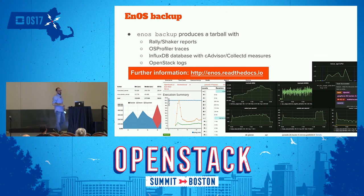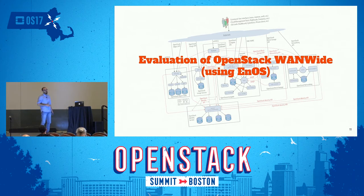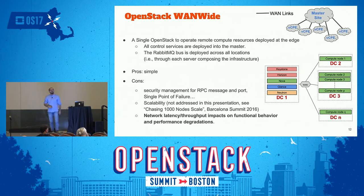Thanks for this overview of ENOS. As mentioned, everything is online — you can go test it and give remarks and feedback. The purpose of this talk is to illustrate how you can perform a complex performance evaluation of OpenStack using ENOS. The scenario we investigate in detail is the vCPE one: all control plane is deployed in one central data center, and remotely you deploy the compute nodes. The RabbitMQ bus is global across all infrastructures.